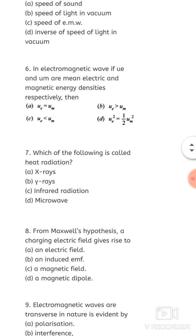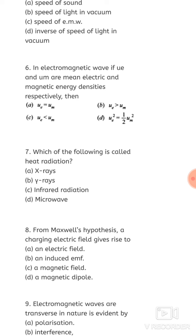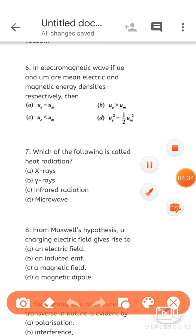Next question: in an electromagnetic wave, if uE and uM are mean electric and magnetic energy density — energy density means energy per unit volume. The electric and magnetic energy density can never be different from each other; their motion is perpendicular, phase difference is zero, and energy density is always equal. So uE = uM.